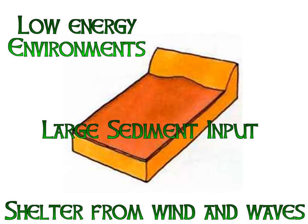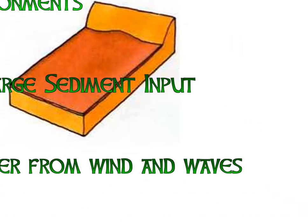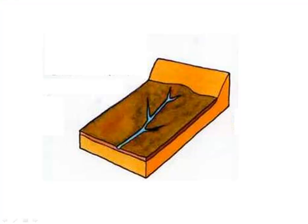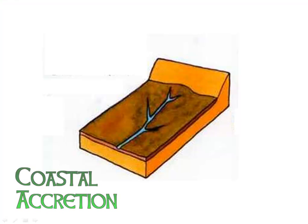As the mud starts to accumulate, in a process that we call coastal accretion, this reduces the length of tidal flooding and allows a small selection of plants to grow on the salt marsh. Channels are cut by the receding water at low tide — you can see a channel there on the diagram.